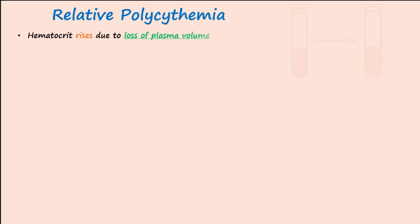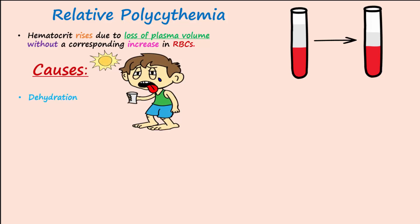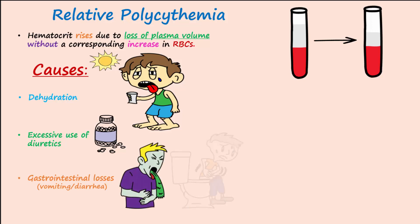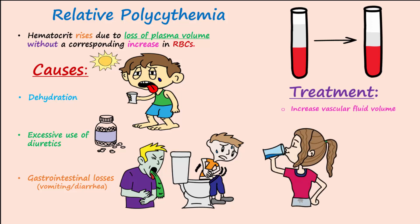Relative polycythemia occurs from loss of plasma volume. This water loss concentrates the red cells and thus increases hematocrit, or the relative amount of red cells compared to plasma. Causes for water loss include dehydration, excessive use of diuretics which increases urination, and gastrointestinal losses from vomiting and diarrhea. Treatment consists of increasing vascular fluid volume by oral hydration or, in a more serious situation, receiving intravenous fluids.